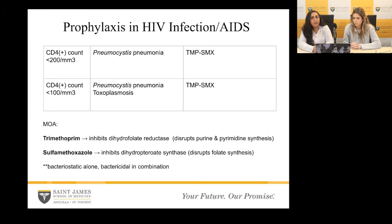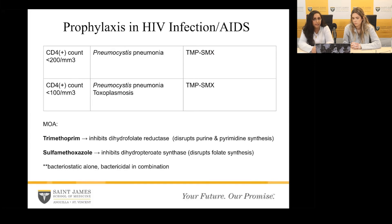We want to give this patient prophylaxis so that if they come into contact with these pathogens, they won't develop serious sequelae. If the CD4 count is less than 200, prophylax against Pneumocystis pneumonia with trimethoprim-sulfamethoxazole. For a CD4 count less than 100, we also want to provide protection against toxoplasmosis — and fortunately the same medication, trimethoprim-sulfamethoxazole, covers both. If the CD4 count improves, the prophylactic medication can be discontinued.